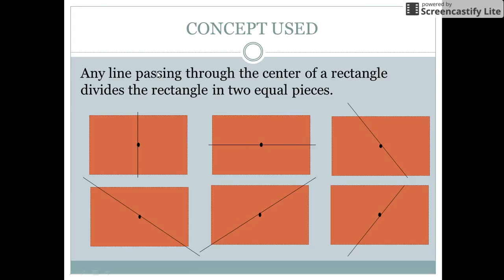Let me tell you the concept used. Any line passing through the center of a rectangle divides the rectangular portion into two equal parts. Now think of the puzzle again.